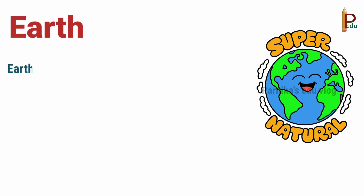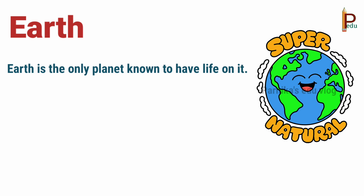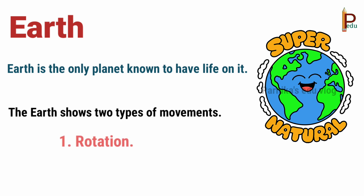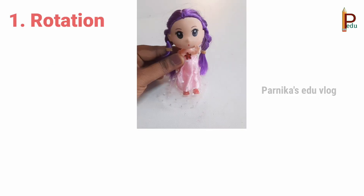Earth is the only planet known to have life on it. The Earth shows two types of movements — one is rotation, and the second one is revolution. Let us clearly understand how it moves.